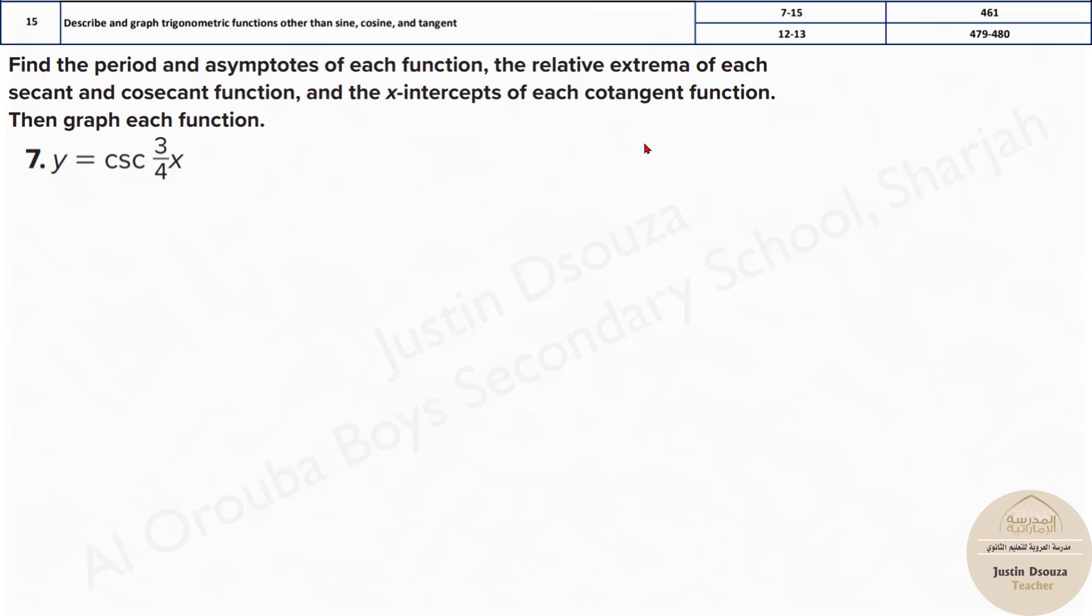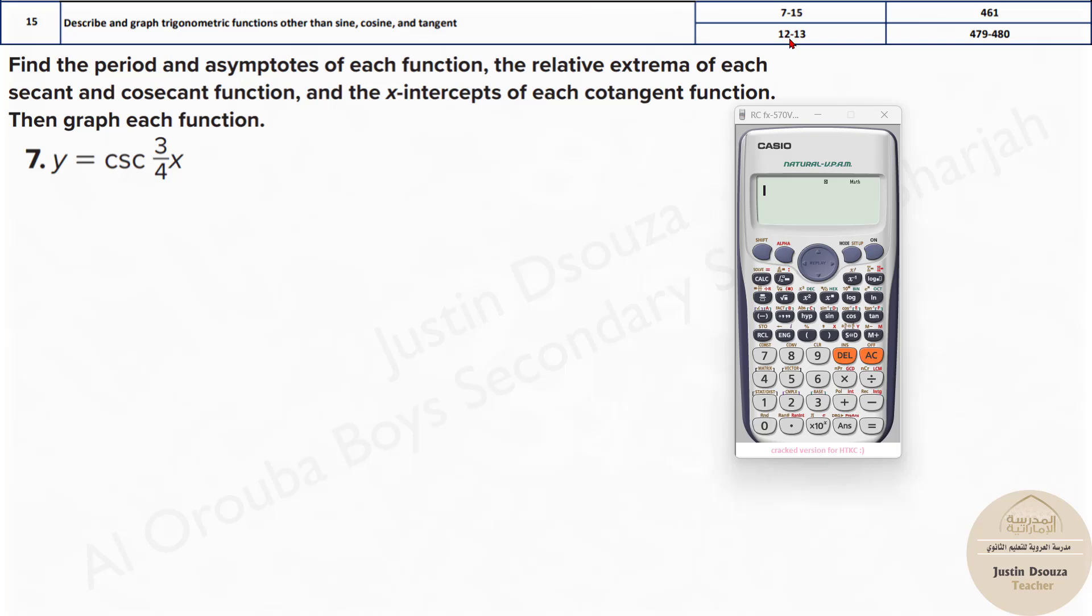I'll teach you the shortcut calculator method. You just need your calculator and type this out. But can you type cosecant directly? No, but we know cosecant is the reciprocal function, 1 by sine. Now write 1 by sine and this function, 3 by 4. Instead of x, we have to put alpha x. That's the variable.